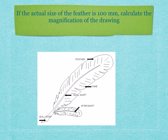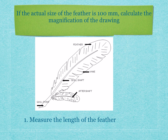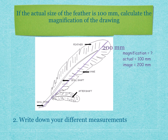Let's have a look at an example. If the actual size of a feather is 100 millimeters, calculate the magnification of the drawing. The first step is you measure the length of the feather — for example, you find the length of the feather is 200 millimeters. The second step is you write down your different measurements: magnification equals question mark, actual size equals 100 millimeters, and size of image equals 200 millimeters.